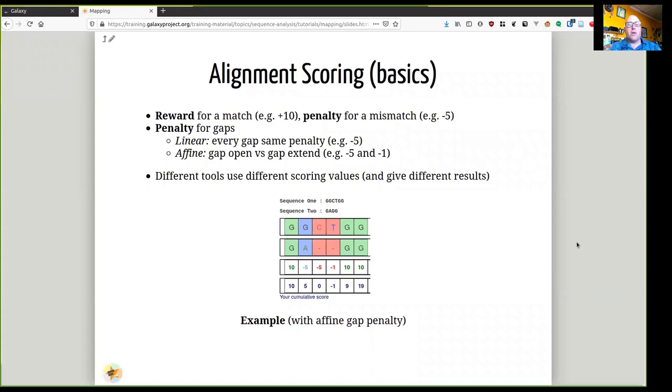The alignment score is calculated by giving a reward for every matching letter in the sequence, a penalty for every mismatch, and then putting in penalties for gaps. So if you're forced to insert a gap, either in the read or in the reference during the process of alignment, you insert a penalty.